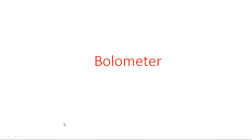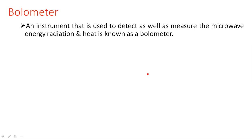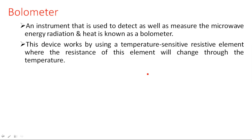In this video I am going to explain about the bolometer. The bolometer is used to measure radiation or heat microwave energy in the form of radiation. Suppose when we are working with any devices like microwave devices, some heat is produced, so in such cases the amount of heat produced can be measured using the equipment called bolometer. An instrument that is used to detect as well as measure the microwave radiation energy and heat is known as a bolometer. This device works by using a temperature sensitive resistive element where the resistance of this element will change with temperature.